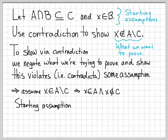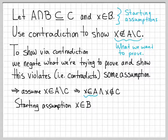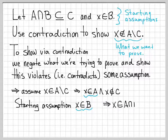Let's go back to one of our starting assumptions and use that. We were told that X is in B. So we've established that X is in A, and from our starting assumption, X is in B. If we combine these two things — if it's in both A and B — then X has to be in the intersection of A and B. So we've deduced that X is in A intersect B.